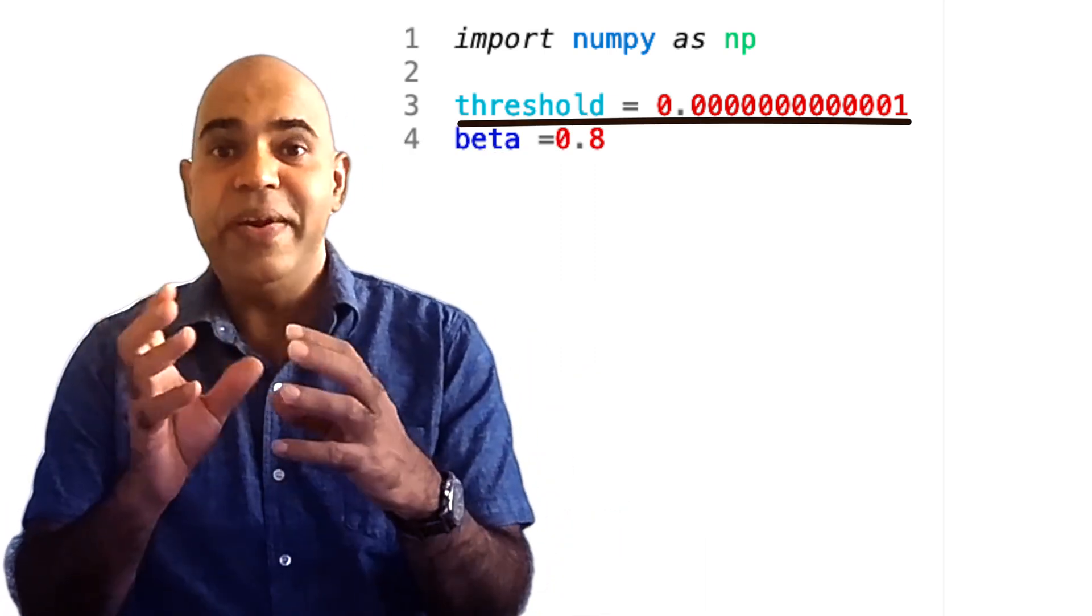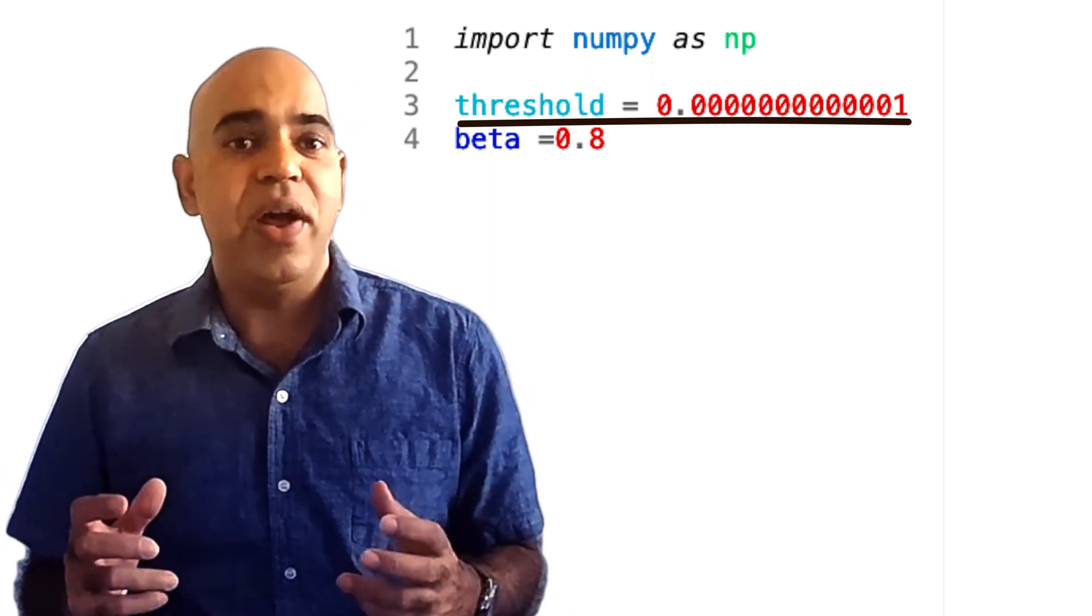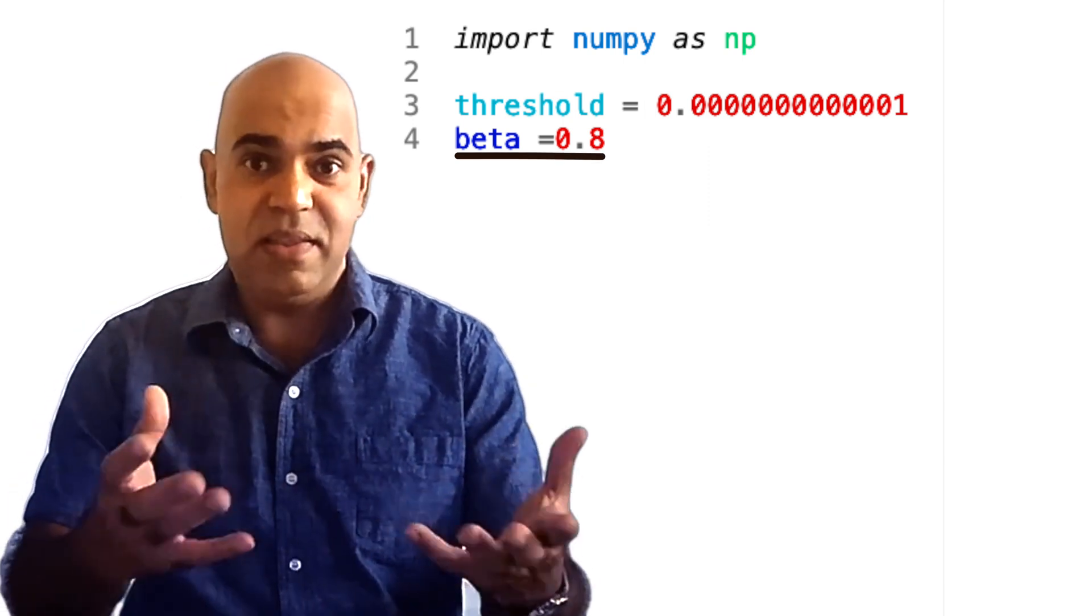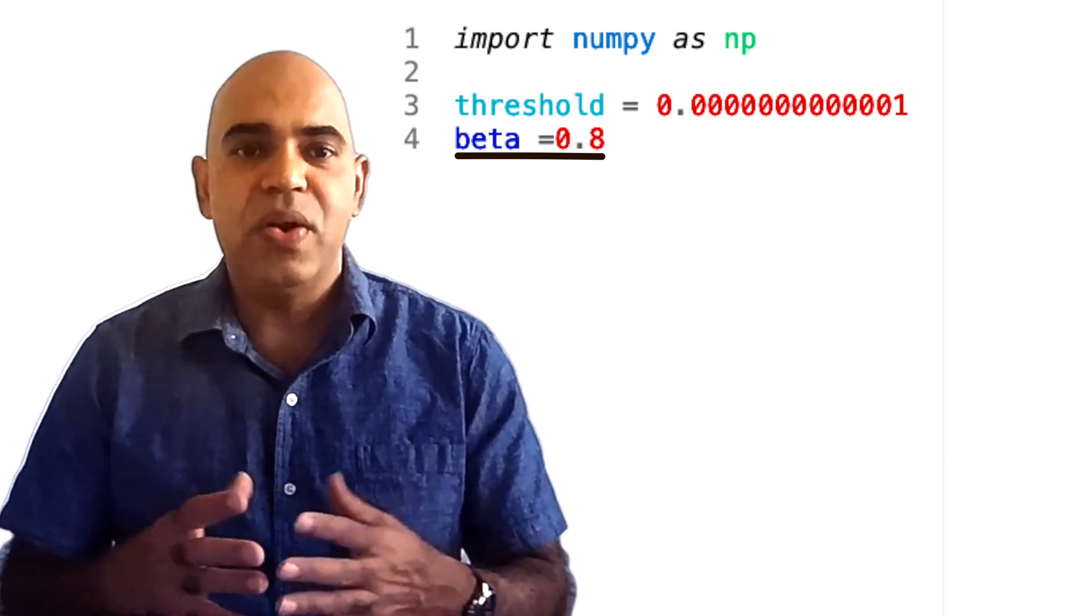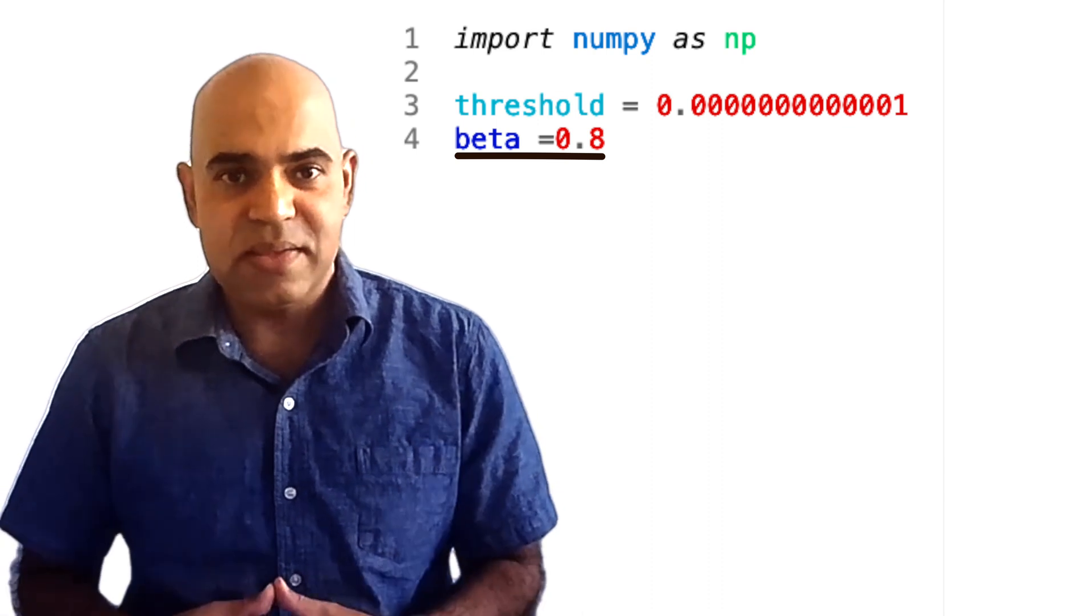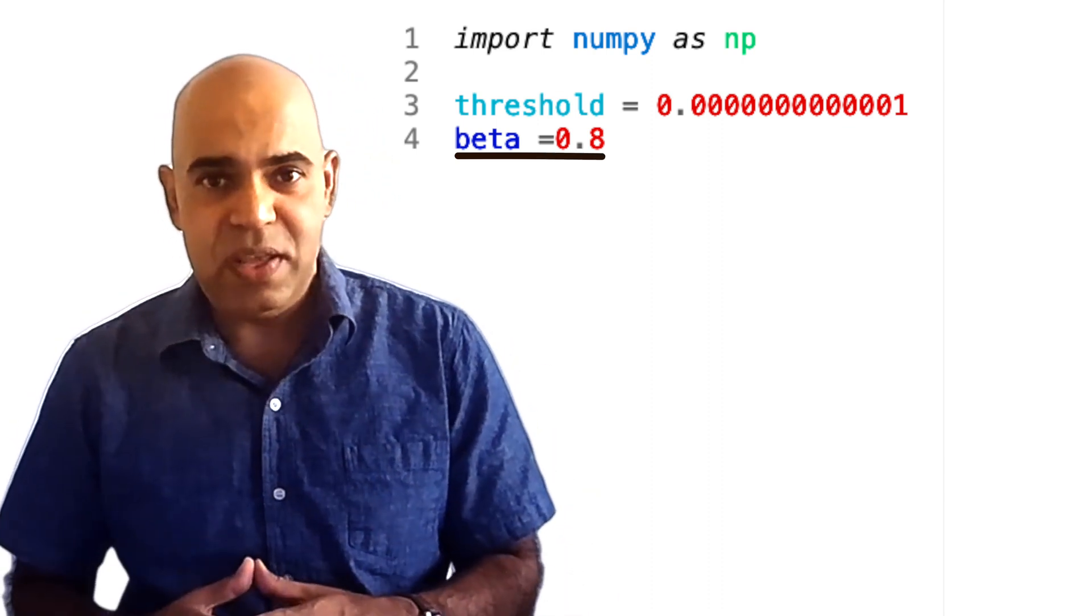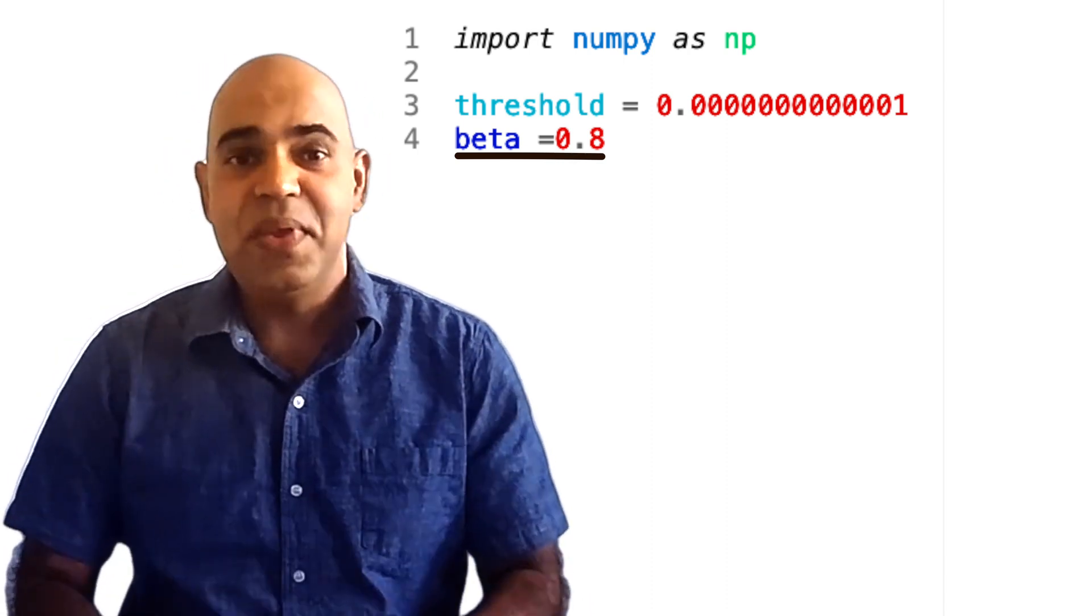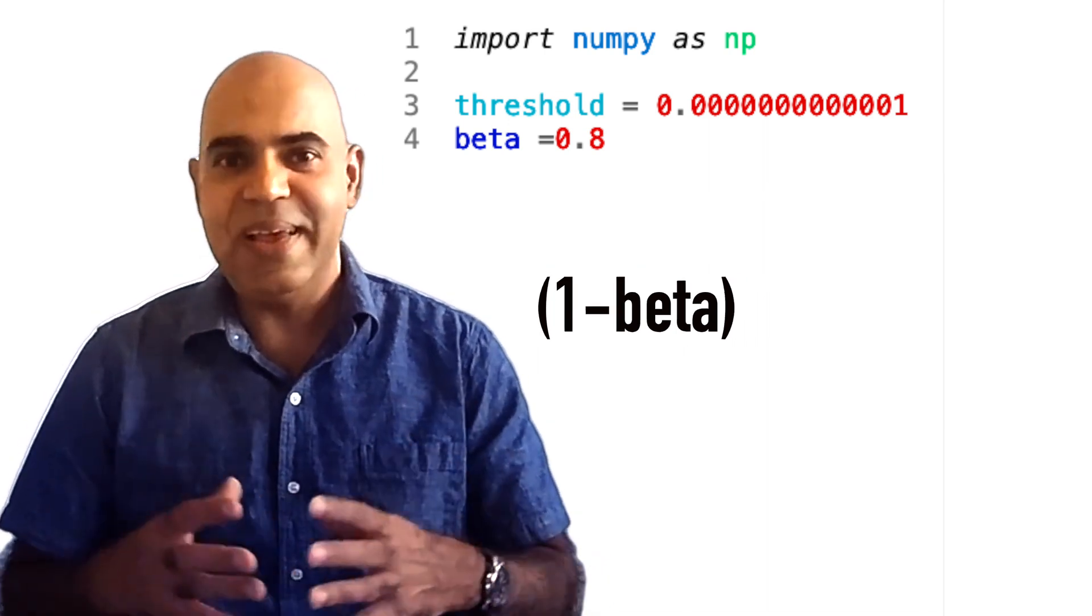The threshold is a very small number that we will use as a stopping criterion for our algorithm. This beta variable is the damping factor used in the PageRank algorithm, which accounts for the probability that a random surfer will continue clicking on links. We talked about this beta in detail in the previous video. This variable beta is also known as the damping factor. 1 minus beta is the probability that the random surfer will teleport.